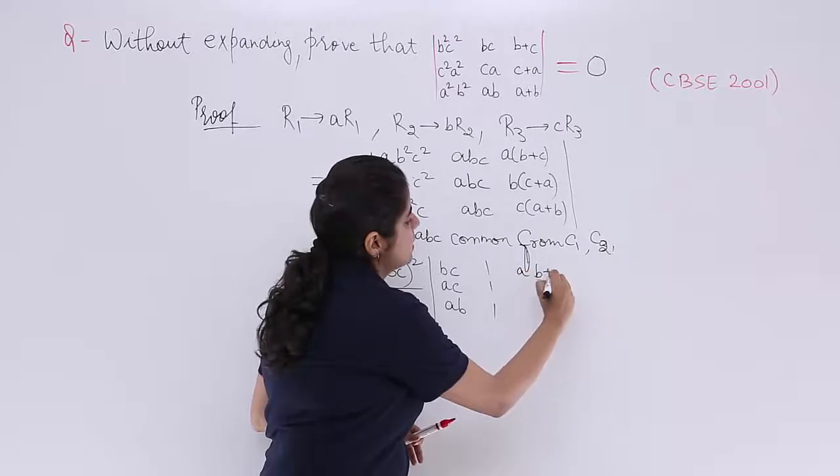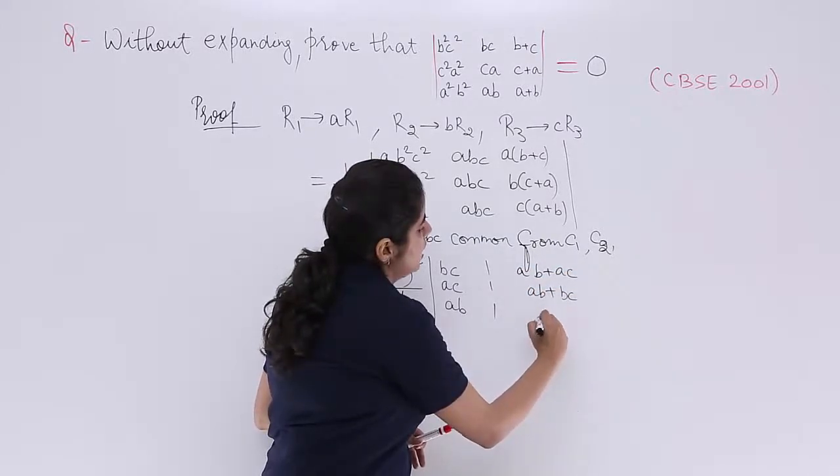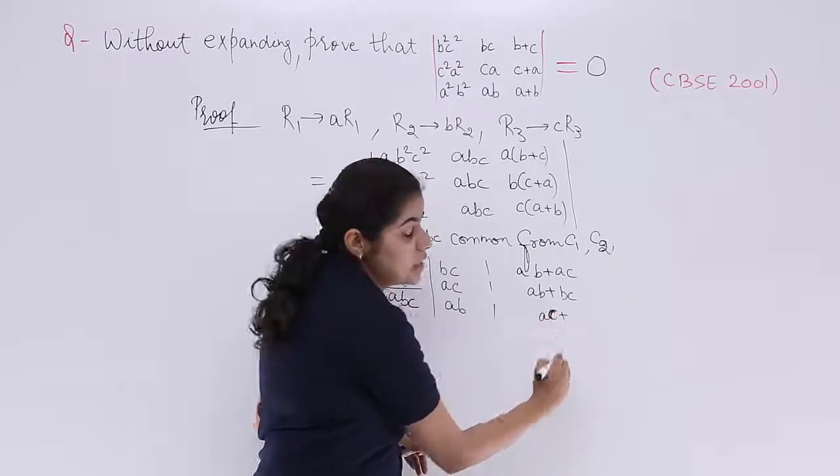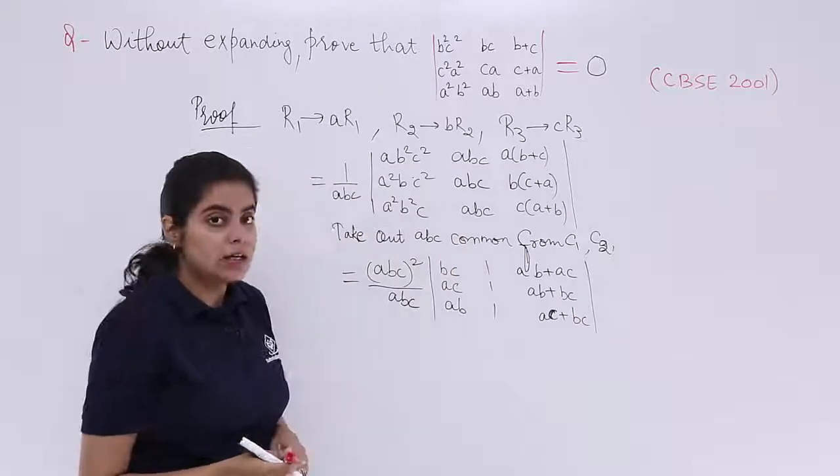Right? And here nothing changes. It is AB plus AC. If you open the bracket, it is AB plus BC. It is AC plus, you see here, we are opening bracket plus BC.